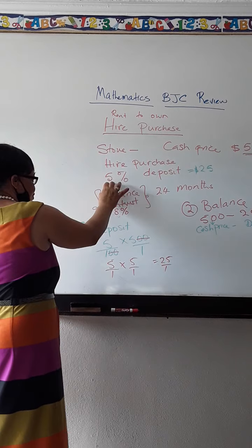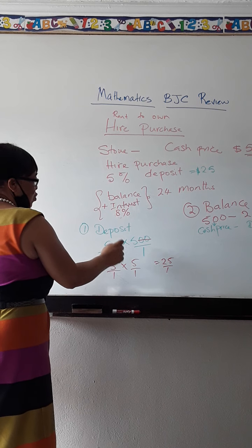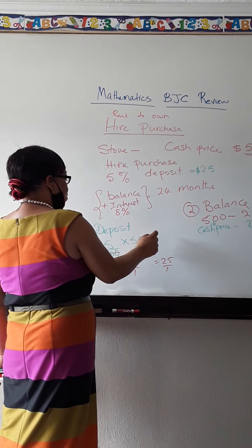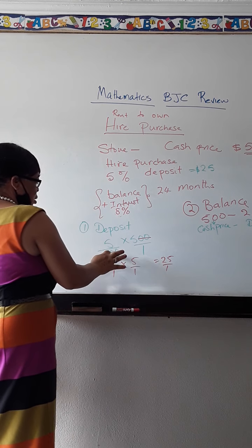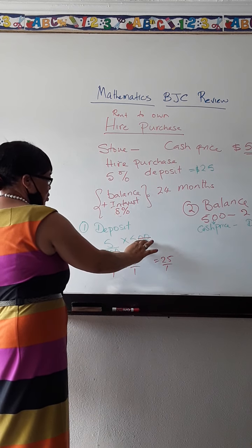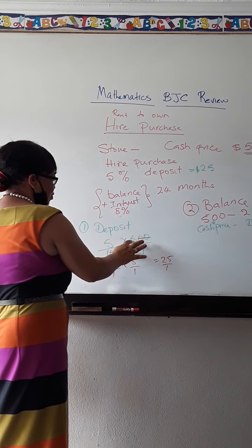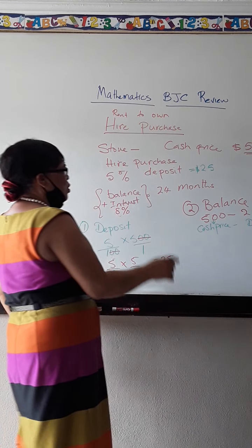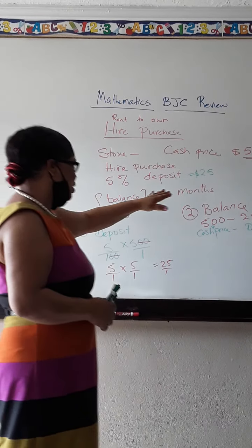So here we go. 5%, 5 over 100, times my cash price, which is $500. These two zeros cancel these two zeros. I'm left with 5 times 5, which is $25. So my deposit is $25.